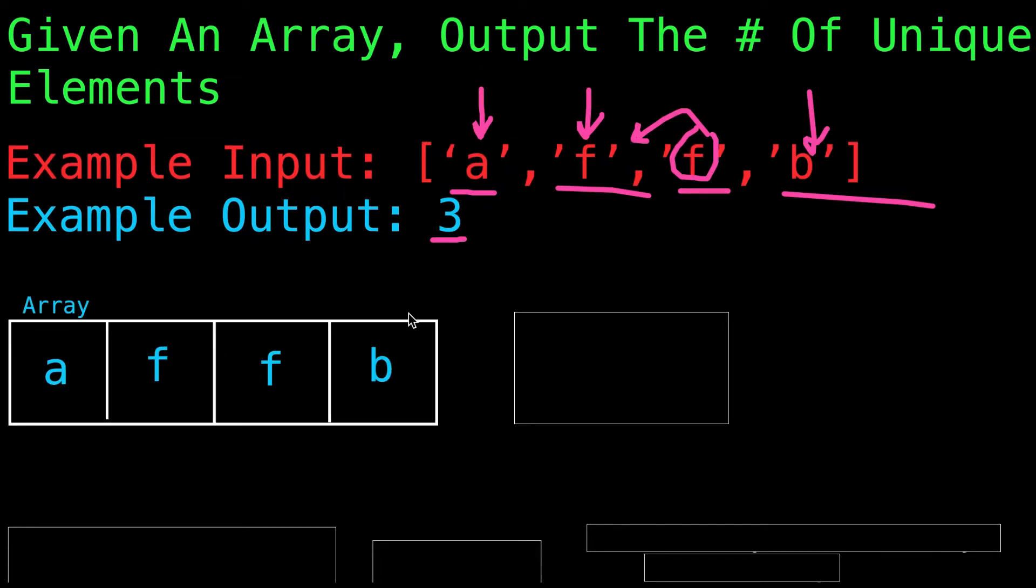Now a naive approach would be taking the array and having a counter and checking all the previous elements to see if it's a duplicate. For example, we would check A, and since there are no previous elements, we would increment our counter to 1. We would check F, since there's no previous elements, we would increment our counter to 2.